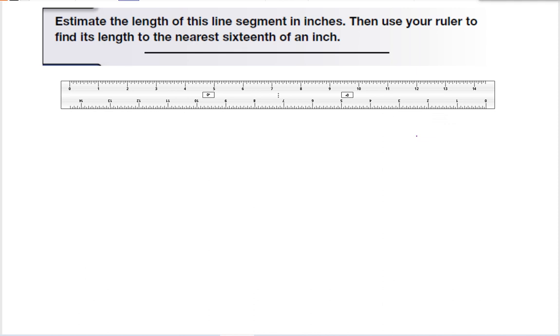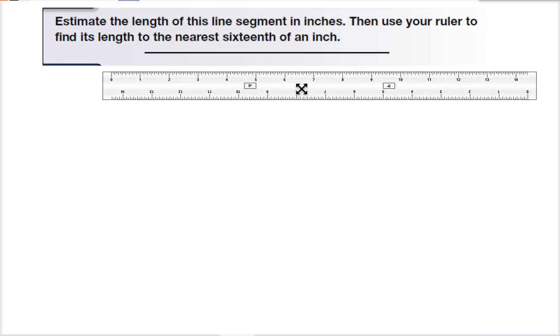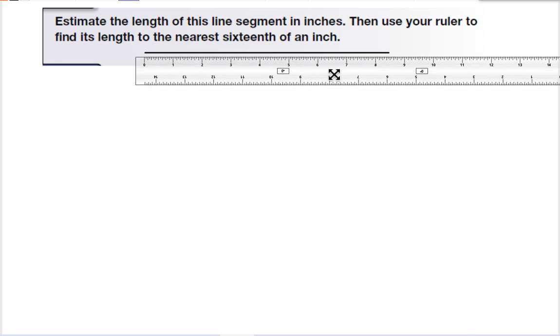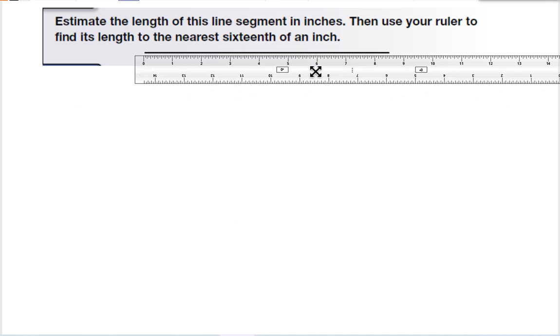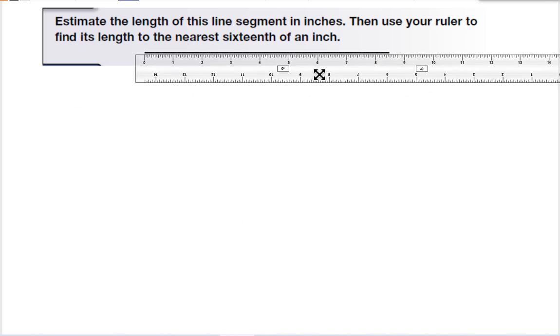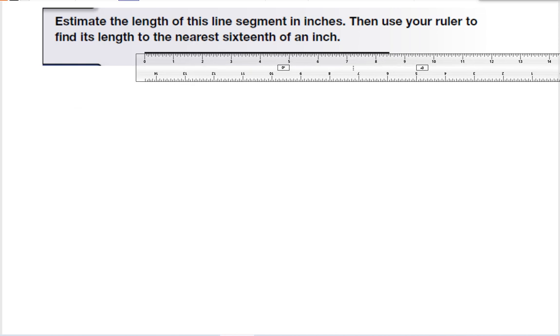Now, each of these tick marks on my ruler is 1 sixteenth of an inch. So, when we measure with a ruler, we take our ruler and bring it up to the end of the line. So, the 0 on my ruler is going to be at the end of the line. So, then we want to look to see where it goes to.